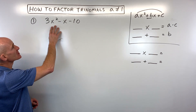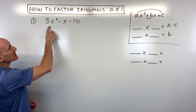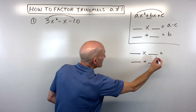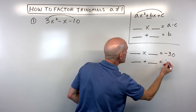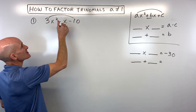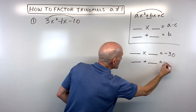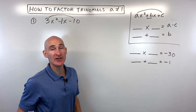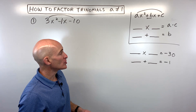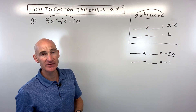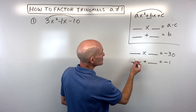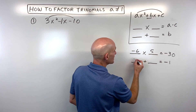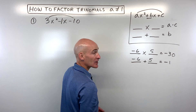We're going to go through two examples. In this first example, the technique is to take the a value, which is 3, times the c value, which is negative 10 — that multiplies to negative 30. Then I look at the middle coefficient, which is understood to be negative 1. So I need two numbers that multiply to negative 30 but add to negative 1. That turns out to be negative 6 and positive 5, because negative 6 times 5 is negative 30, and negative 6 plus 5 equals negative 1.